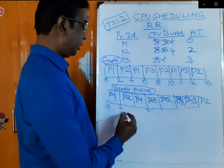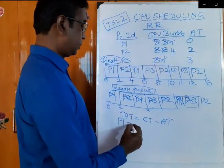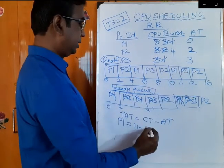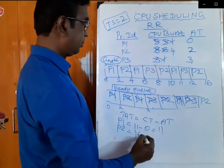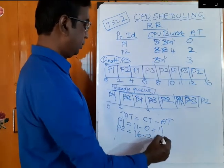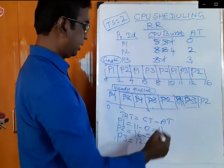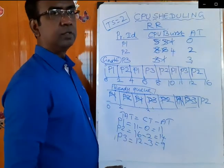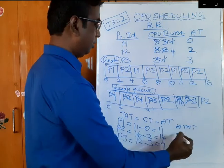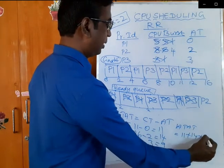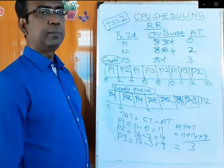Now calculating turnaround time — it is simply completion time minus arrival time. For P1, completion time 11 minus arrival time 0 equals 11. For P2, completion time 16 minus arrival time 2 equals 14. For P3, the turnaround time is 9. Average turnaround time is 11 plus 14 plus 9 divided by 3.